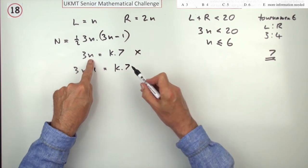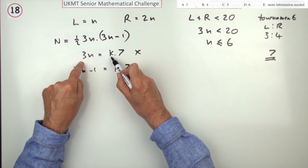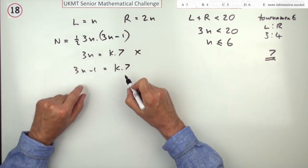Now this means no use, because in order for that to be a multiple of 7, that number there, k would have to be a multiple of 3. So the first one, 3 makes n 7, and n's got to be less than 6, so that's no use. So this will be the one.